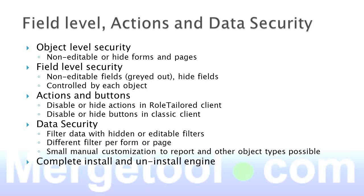Data security is the ability to filter data so users can only see certain records. You can also apply flow filters so you only see records within a date range. You can apply filters that are hidden, or have filters that are editable and more helpful for the user. For example, you might default a filter for the current year so users only see orders from this year when they go to posted invoices. You can also have a different filter per form — on the customer list you might see the complete list, but in the cart you can only see records for your own sales person.